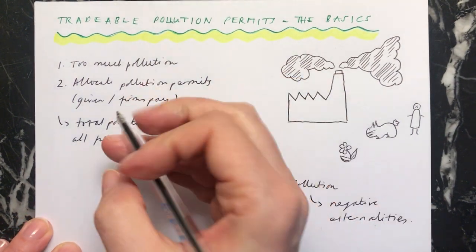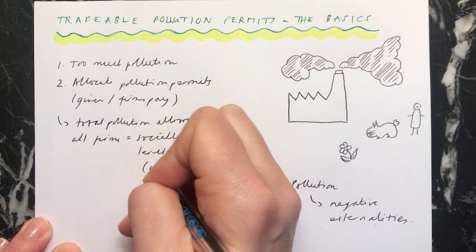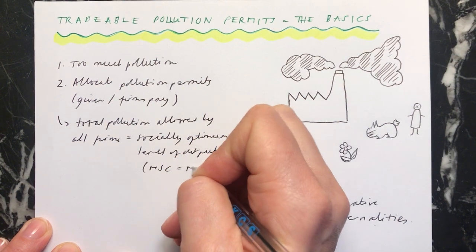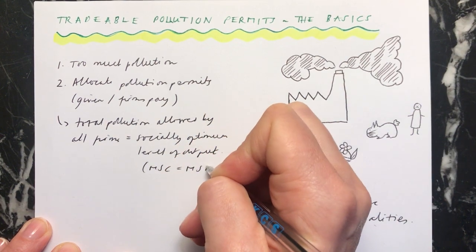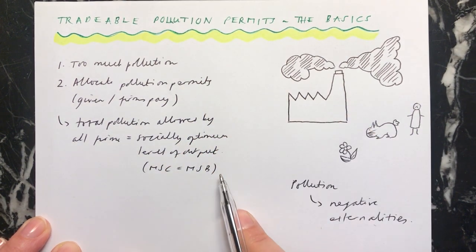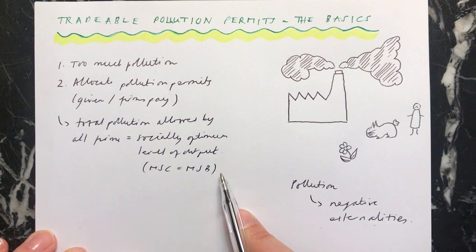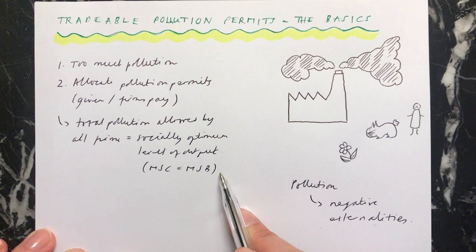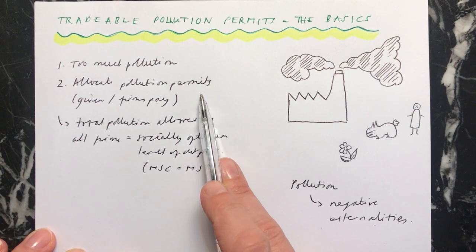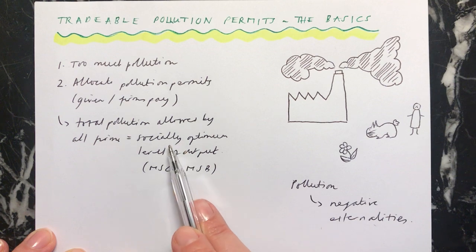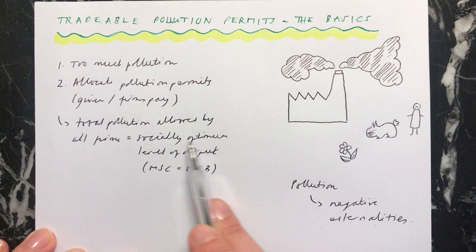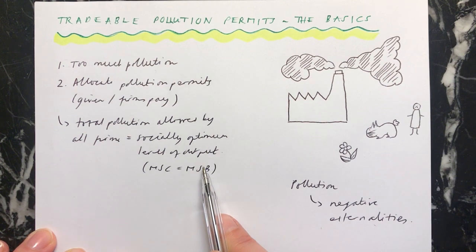So that marginal social cost is equal to marginal social benefit. Somehow the government has to work out what is the socially optimum level of output. But the idea is that when you add together how much all of the firms are allowed to pollute, the total pollution will leave us at this point of the socially optimum level of output.